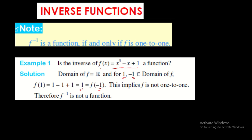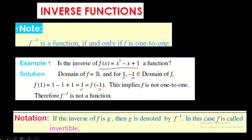This implies the inverse is not a function. As for notation: if the inverse of f is g, then we write g = f⁻¹, and f is said to be invertible. So if a function has an inverse, we call it invertible.